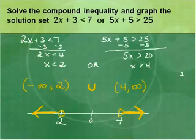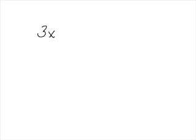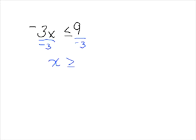One more important reminder: if you have a problem such as −3x ≤ 9, when you divide both sides by −3 to solve, remember that dividing by a negative switches the direction of the inequality sign. So it becomes x ≥ −3. Keep that in mind — you must switch the sign if you divide by a negative. That ends this session on compound inequalities.